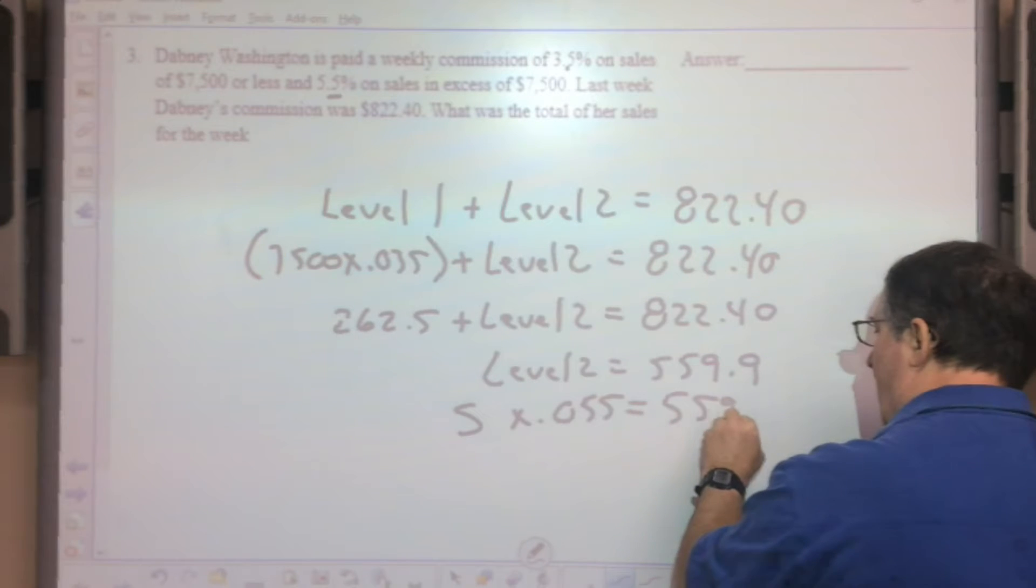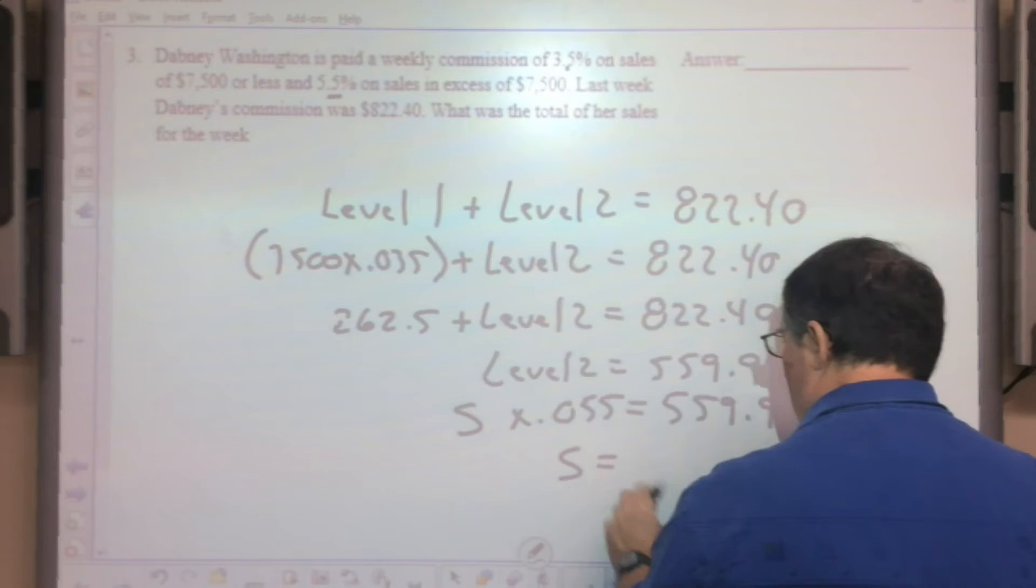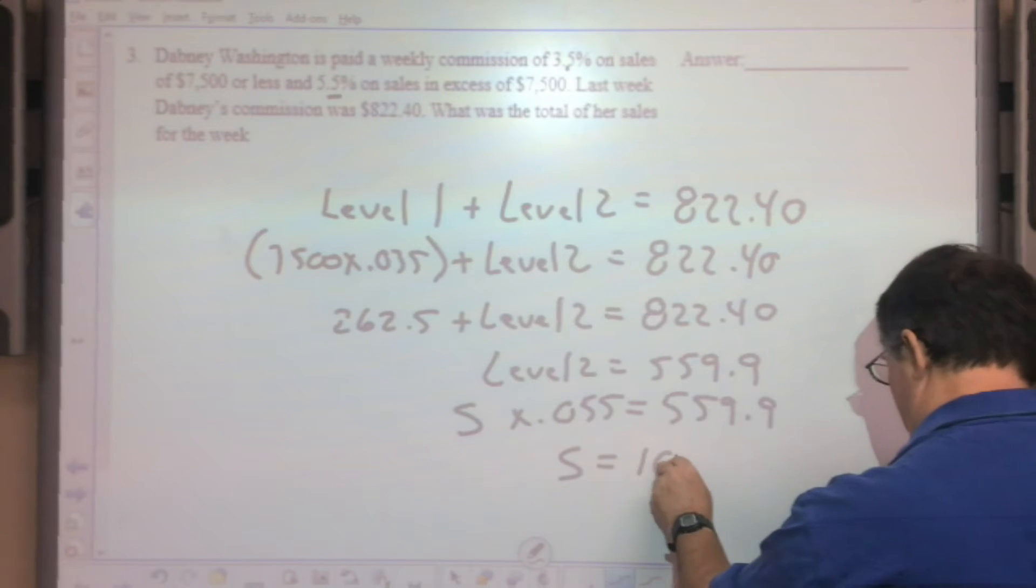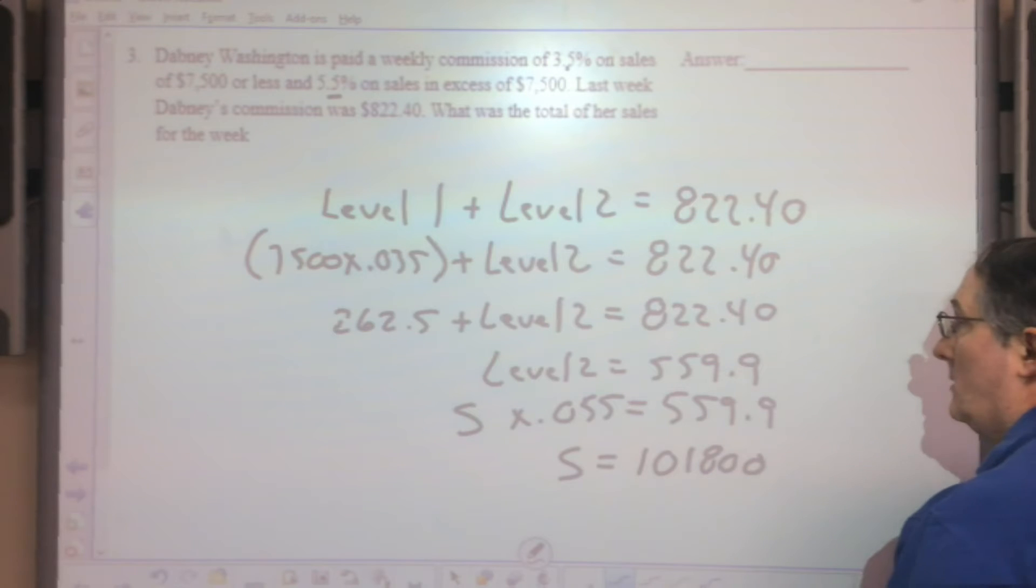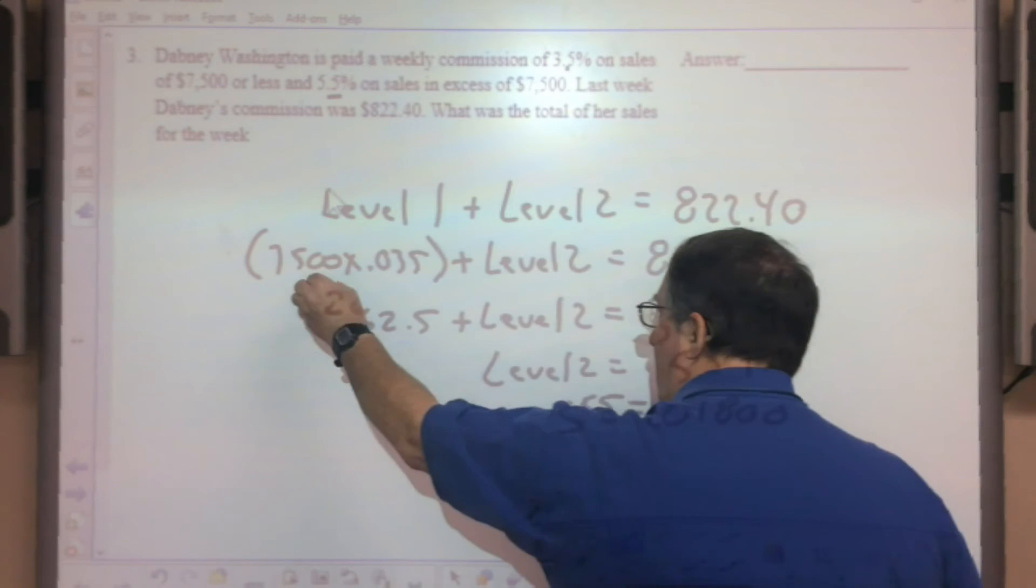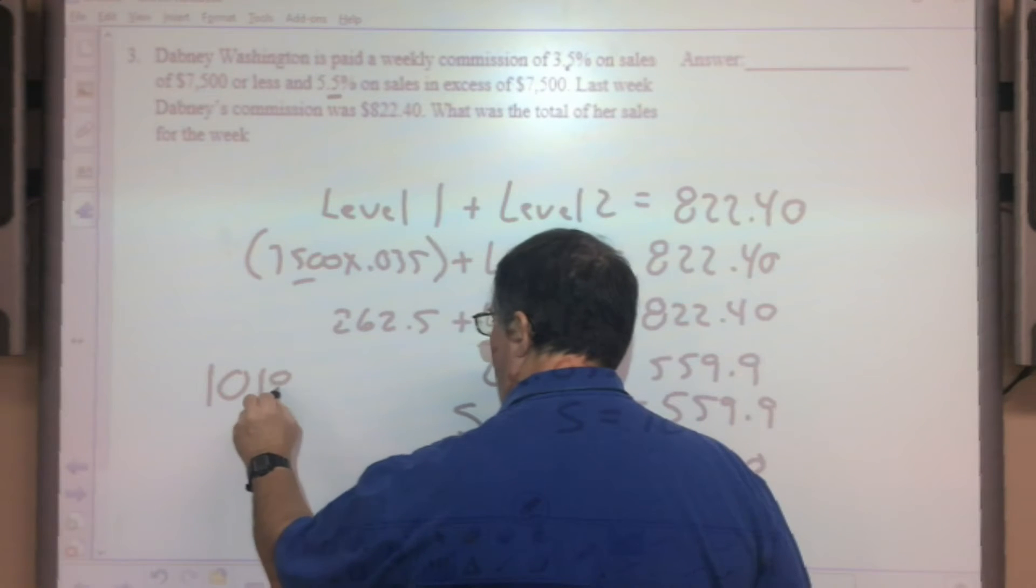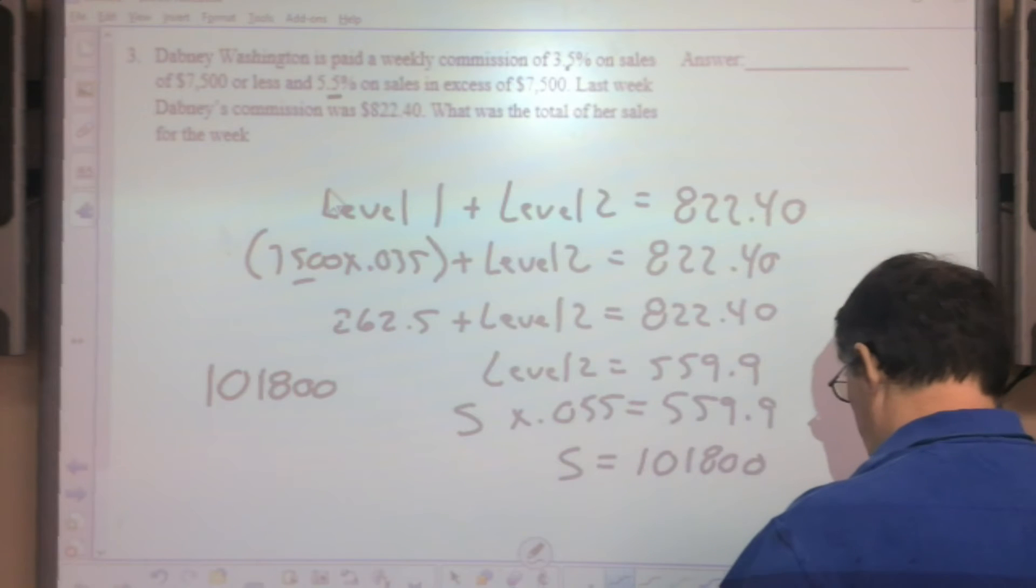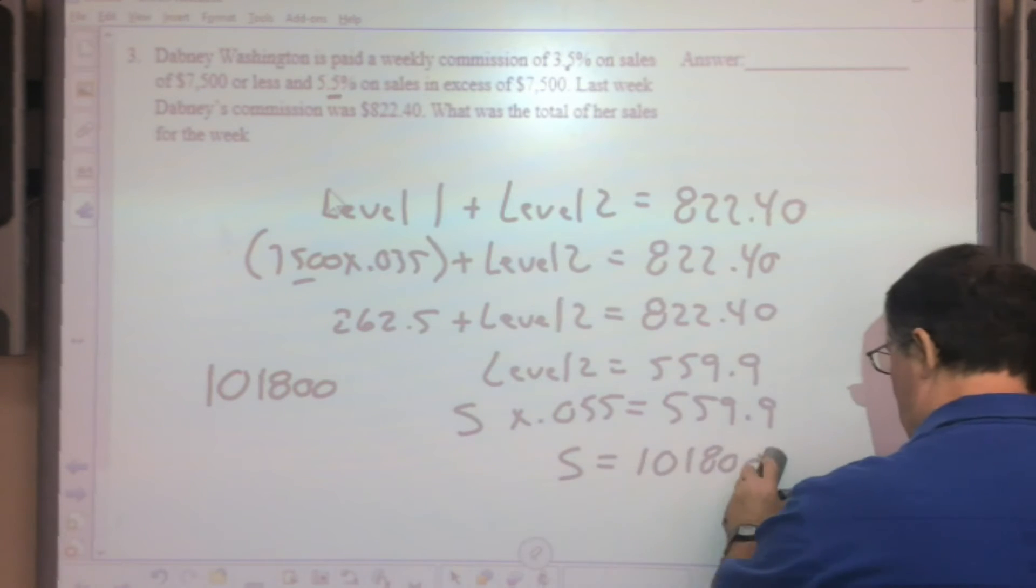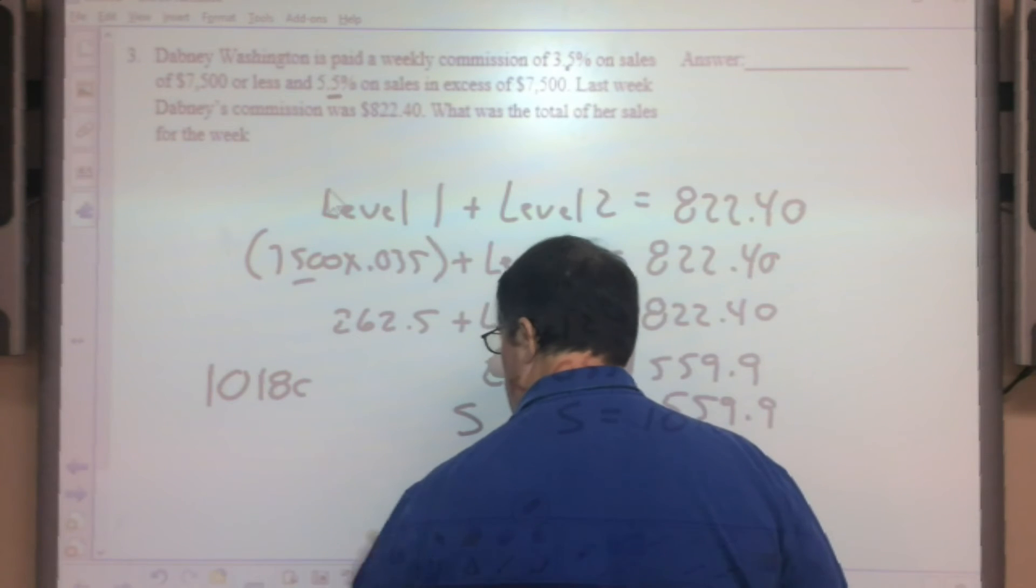Sales times the rate of 5.5%, or 0.055, is going to equal $559.90. Solve for S by dividing both sides by 0.055, and the sales in the second level is $10,180. But that's only in the second level, you had to have sold...